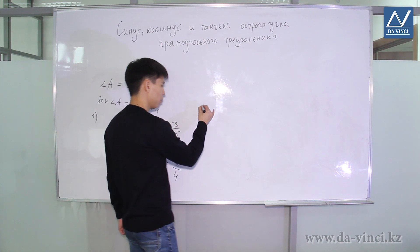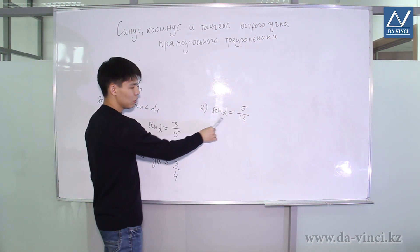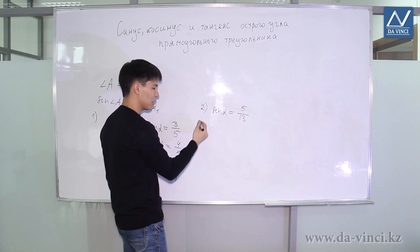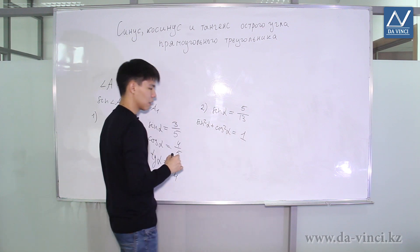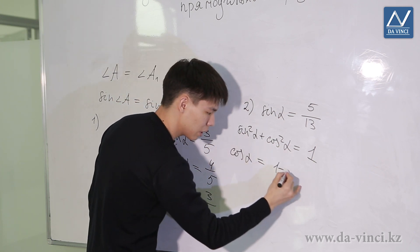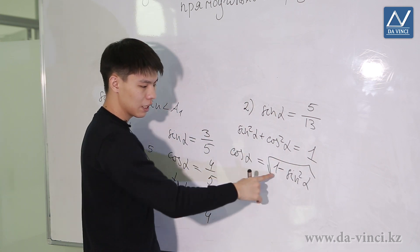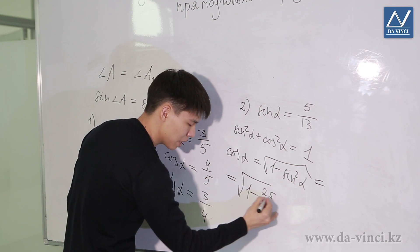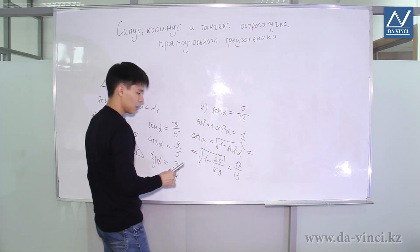Let's consider the following example. We know that the sine of some angle alpha is equal to 5 thirteenths. It is required to find cosine and tangent. Despite the fact that we introduced the sine through a right triangle, we can find the cosine and tangent without drawing the triangle. We use the basic trigonometric identity: sine squared alpha plus cosine squared alpha equals 1. Then cosine squared alpha equals 1 minus sine squared alpha, and taking the square root, cosine alpha equals the square root of 1 minus sine squared alpha. Substituting: 1 minus (5/13) squared = 1 minus 25/169. Extracting the root, we get 12 thirteenths. So cosine is 12 thirteenths.